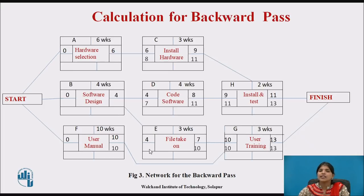The latest start date of E is calculated as 10 minus 3, giving 7. For F, it is 10 minus 10, giving 0.